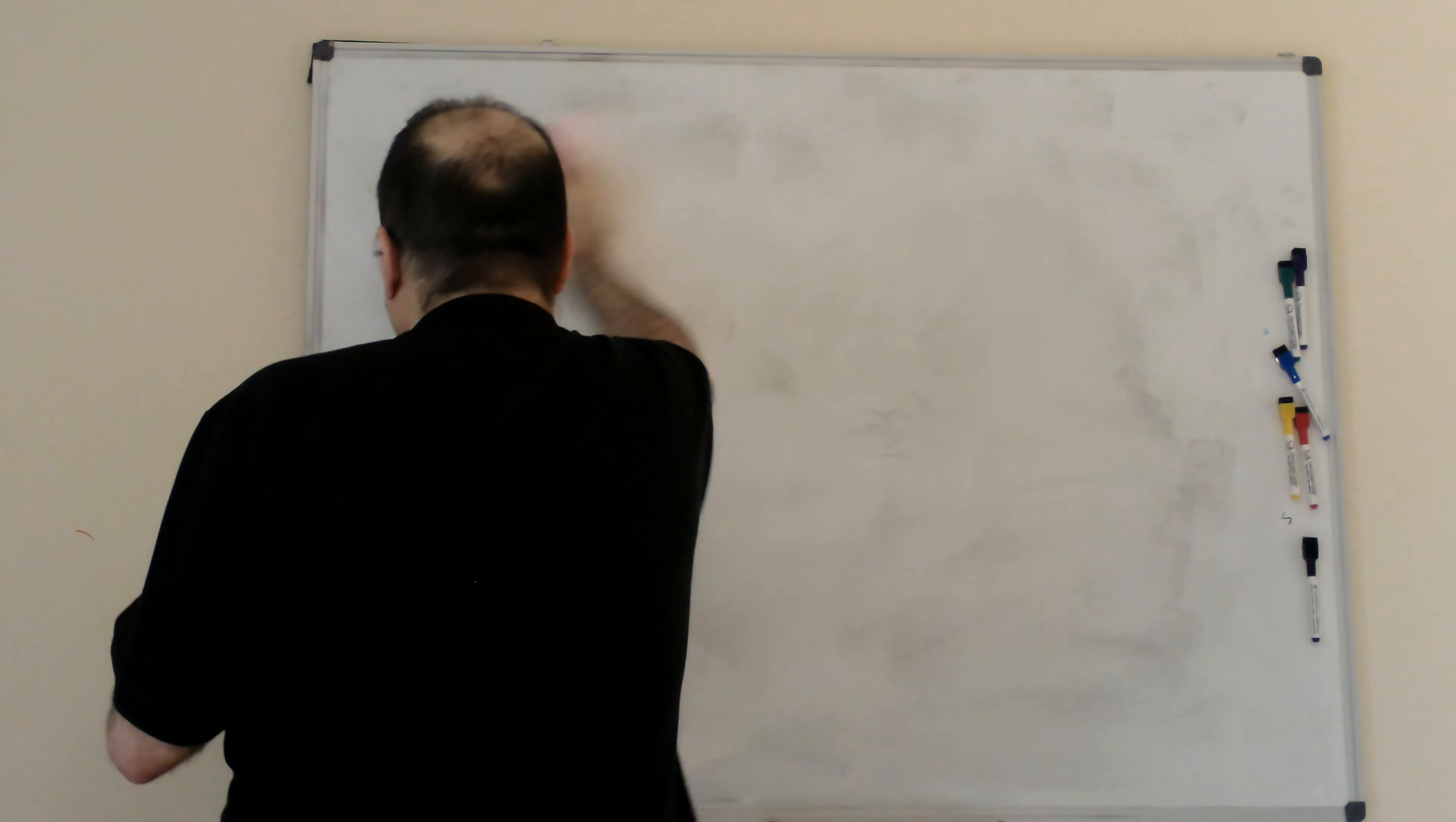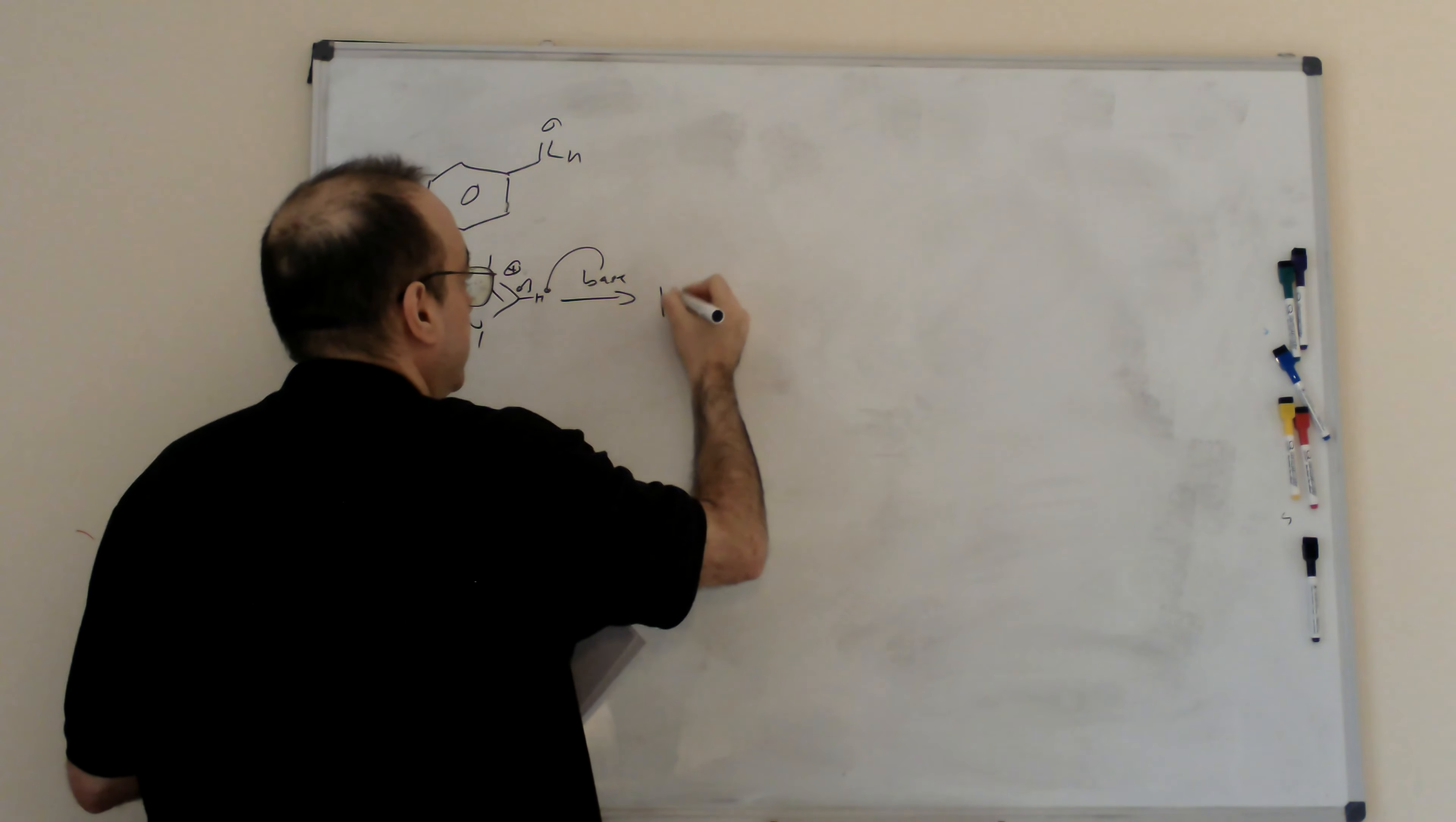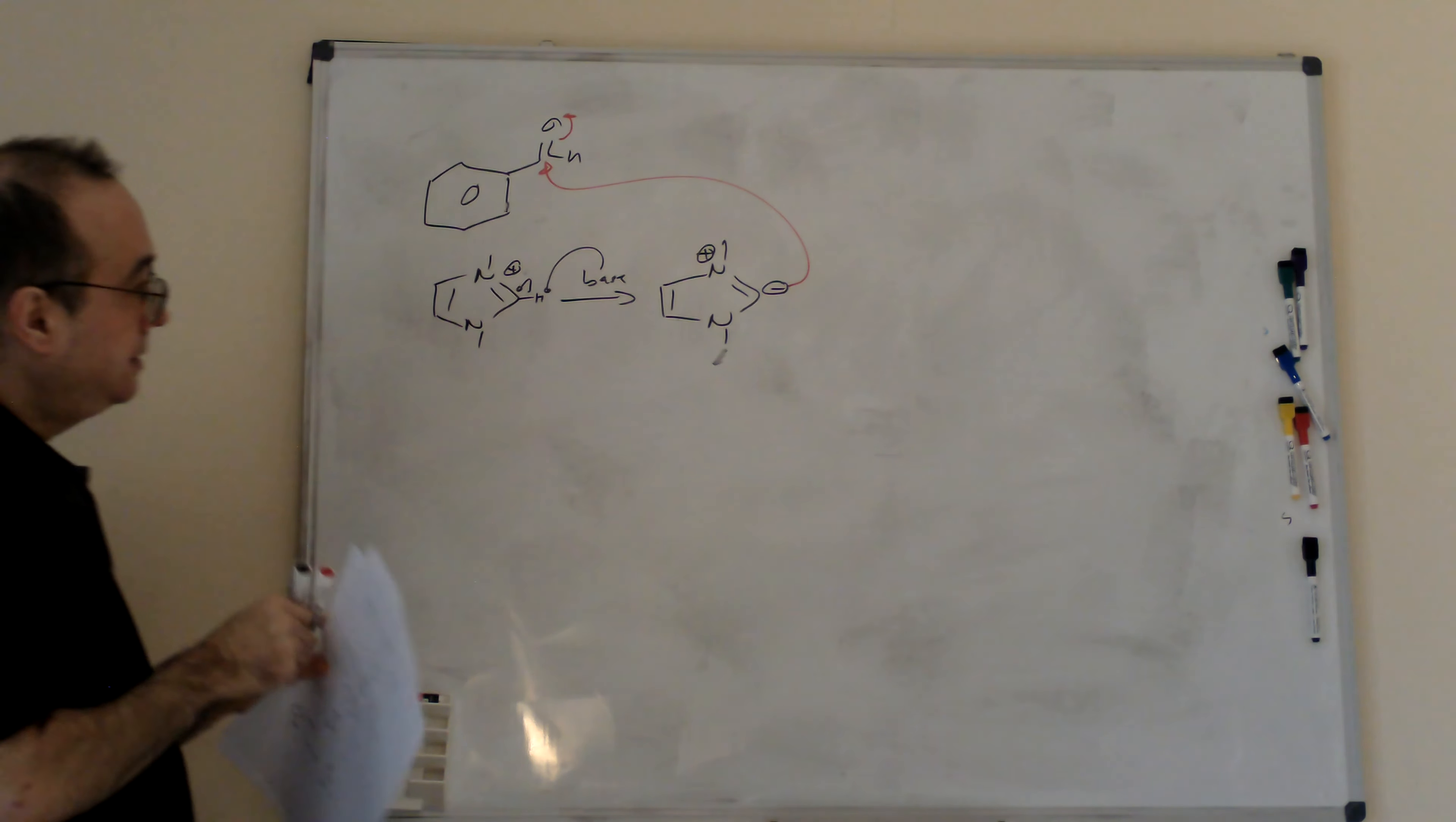Next one is a basic benzoyl condensation. We start with aldehyde and we add this carbene, that again with base we generate that carbene. Okay. Then this carbene is attacking aldehyde and we are forming.